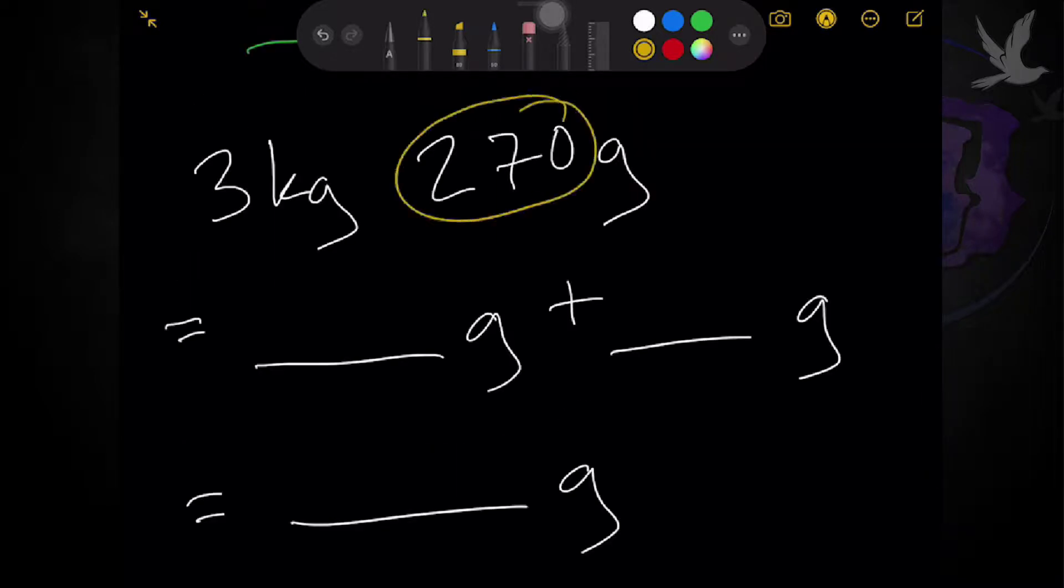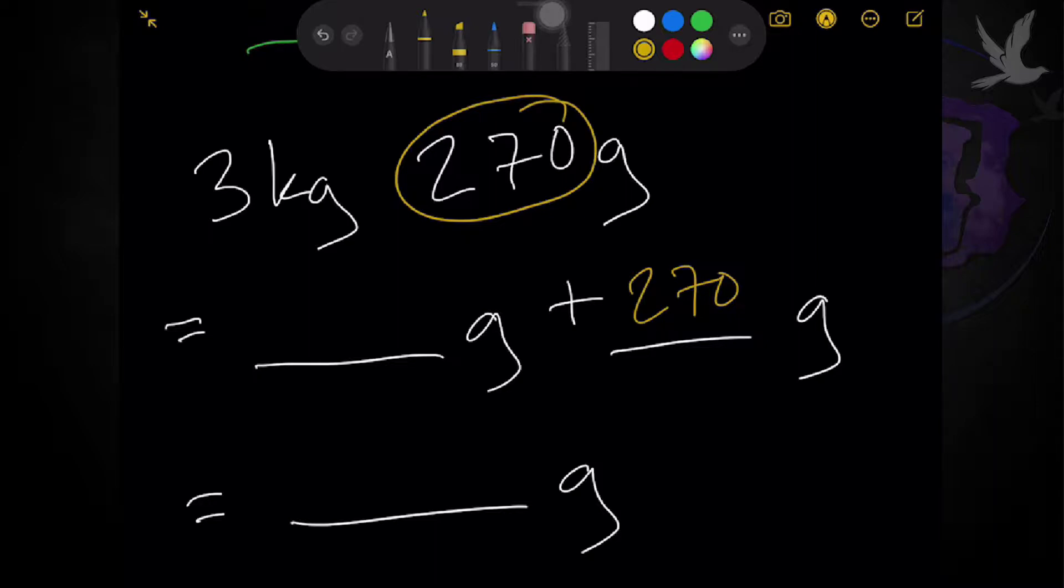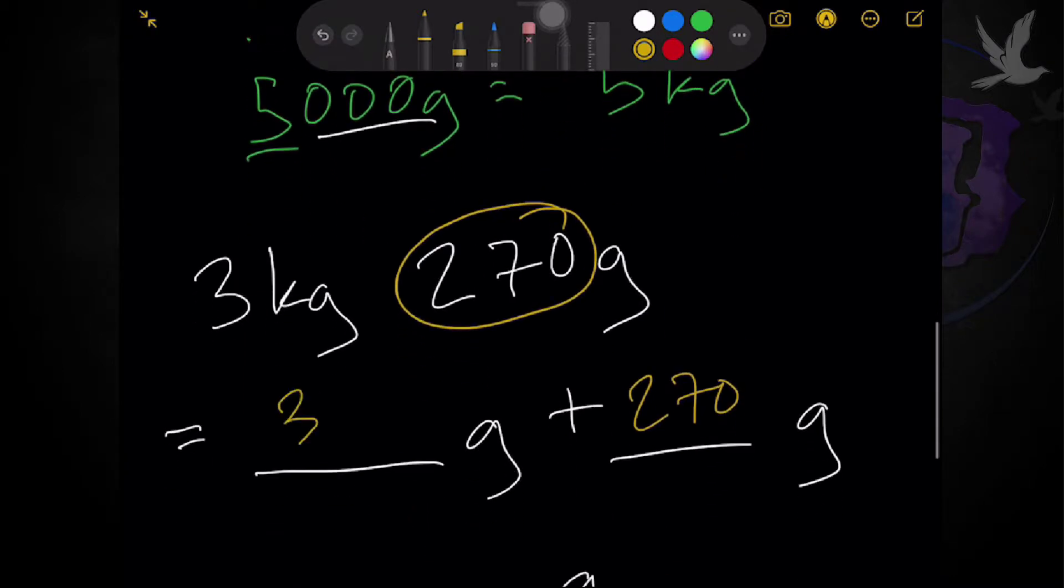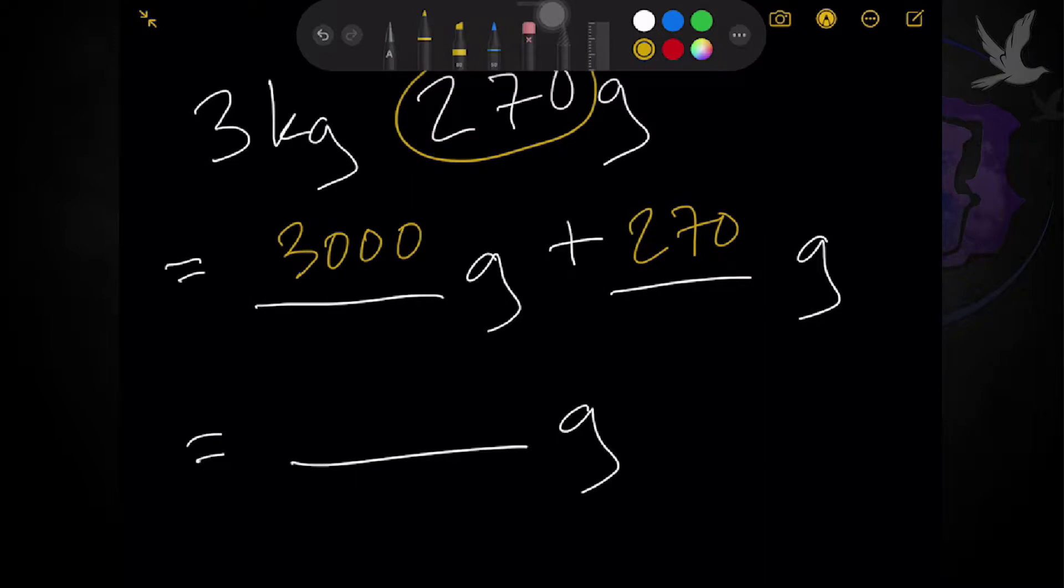So then again, 270 grams is already there. So, you just write 270 grams there. And for your 3 kilograms, convert it to grams. So, like what we did earlier, 3 kilograms is equivalent to 3,000 grams. So, for your final unit, all you need to do is just to write 3,270 grams.